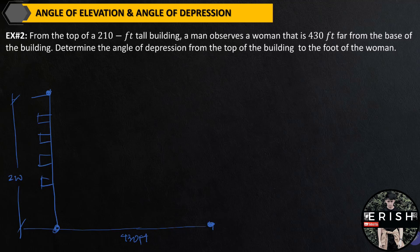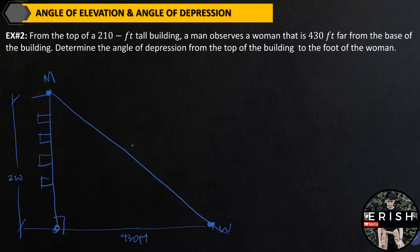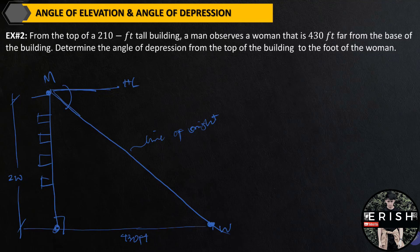This is the woman and this is our man. The question now: determine the angle of depression from the top of the building to the foot of the woman. Considering this as a right triangle, this is our line of sight. When the man observes, what is asked is the angle of depression — between the horizontal line and the line of sight.